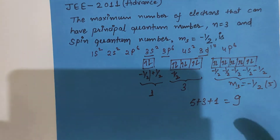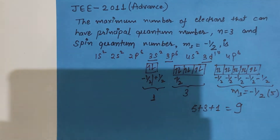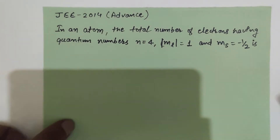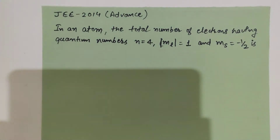This question was asked in JEE Advanced 2011 and was a straightforward electronic configuration question. Now let's see the next question, which JEE Advanced 2014 has asked: in an atom, find the total number of electrons having quantum numbers n equals 4, ml equals 1, and ms equals minus 1 by 2.